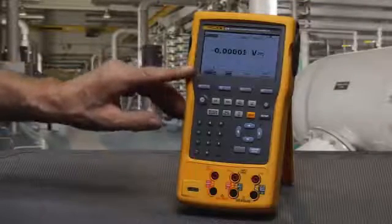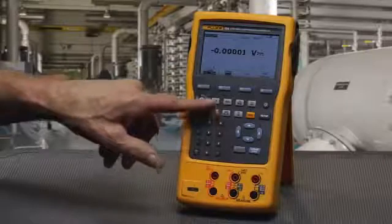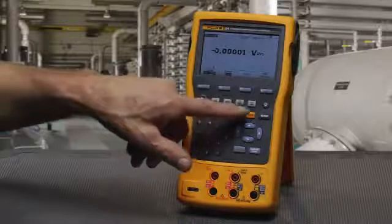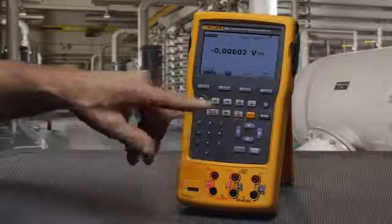With the measure screen, you would select the function that you'd want to measure: volts DC, milliamps, thermocouples or RTD, resistance, or volts AC.